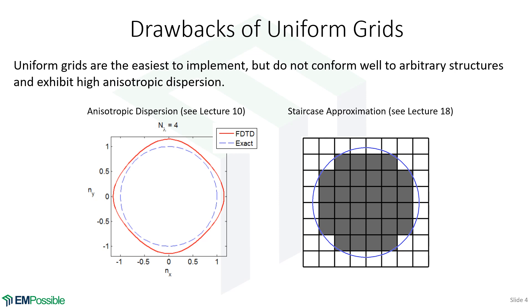Another drawback is that this is a Cartesian grid, and we have to make a staircase approximation. If we have curved structures, that can become a problem. There are all kinds of fixes to these things, but for the standard Yee grid scheme, these are the main drawbacks: the staircase approximation and the numerical dispersion.